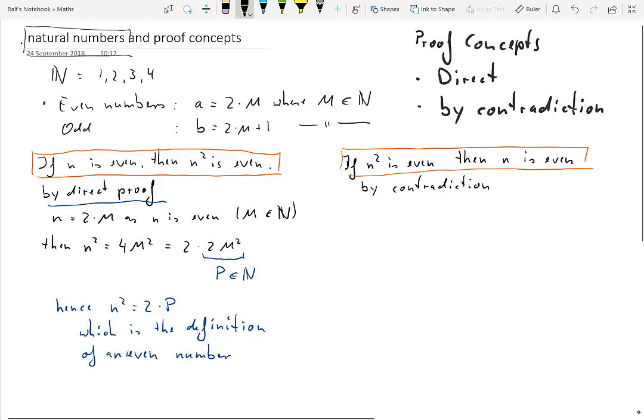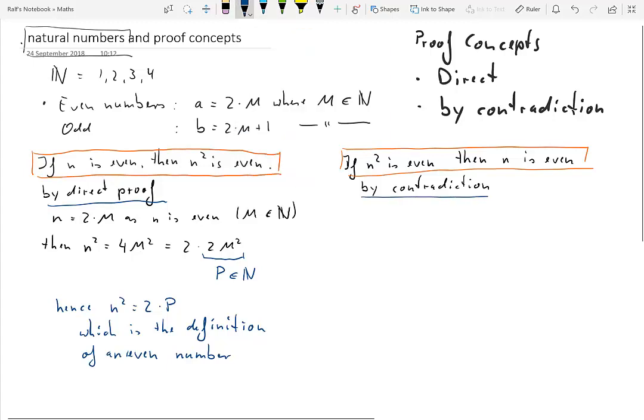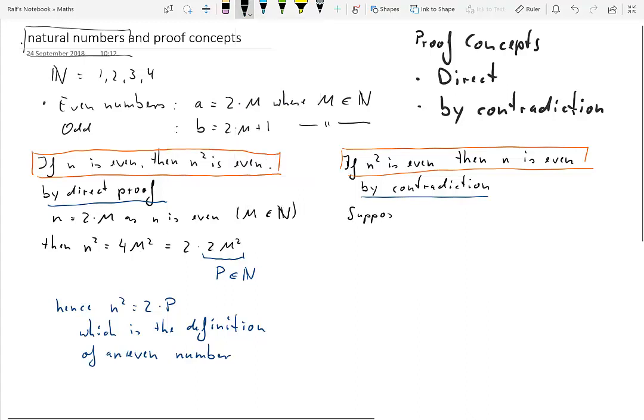When you have a proof by contradiction, you are starting out with something that is not part of the statement which you want to establish. So here we suppose that n is actually an odd number. Remember we want to establish that n is even, but let's say n is odd. So if n is odd,